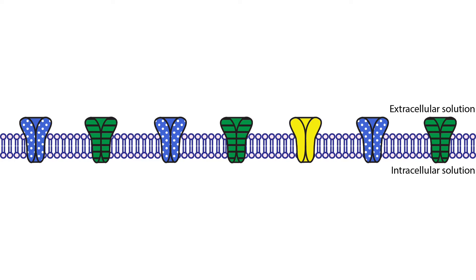A phospholipid bilayer with embedded ion channels is shown here. Throughout our lessons, the blue dotted channels represent sodium channels, green striped represent potassium, and solid yellow represent chloride.